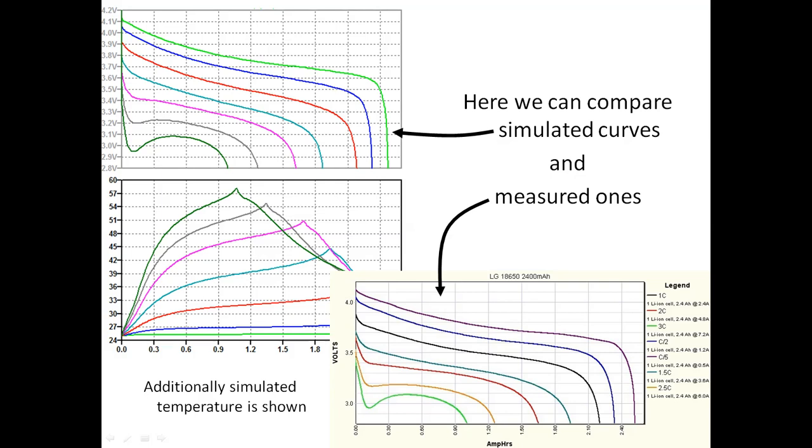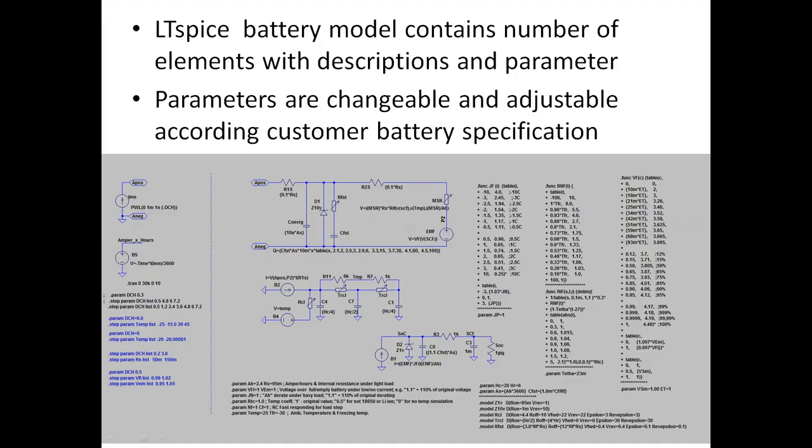Inside the model is an LT SPICE schematic, which you can see on screen, plus a lot of text description and a lot of parameters. Importantly, the parameters are available for changing, and by changing parameters we can adjust the original model to a particular battery specification or to a particular end customer application.